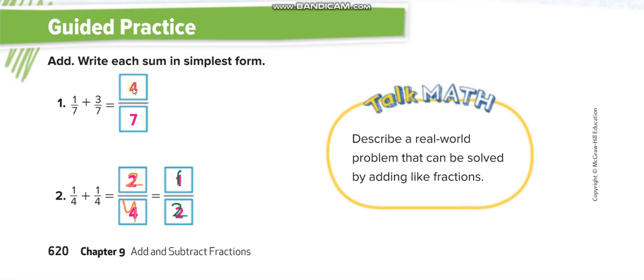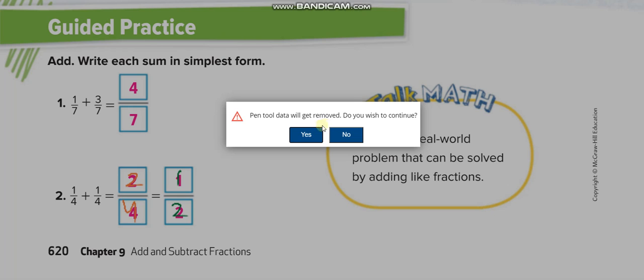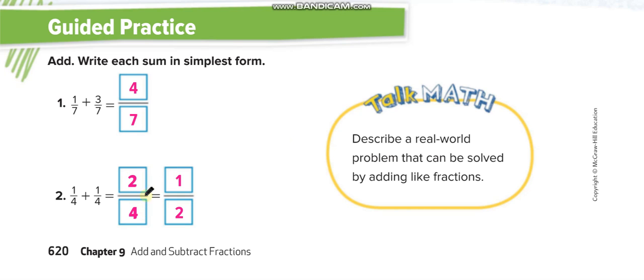Here, 1 plus 3 equals 4 over 7, and here 1 plus 1 equals 2 over 4, and 2 over 4 we can simplify as 1 over 2.